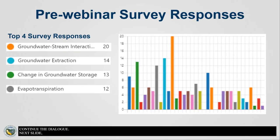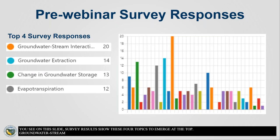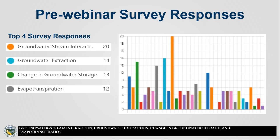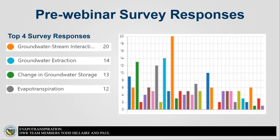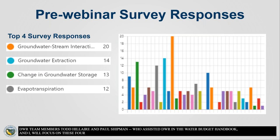As you can see on this slide, survey results show these four topics to emerge at the top: stream-groundwater interaction, groundwater extraction, change in groundwater storage, and evapotranspiration. DWR team members Todd Hiller and Paul Shipman, Sakib Najmus from Woodard and Karan Consultant, who assisted DWR in the Water Budget Handbook, and I will focus on these four topics in addition to providing an overview of the handbook.